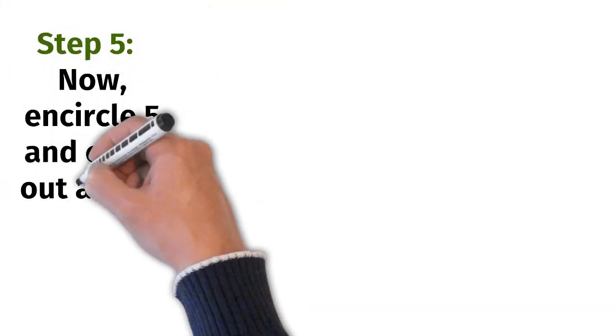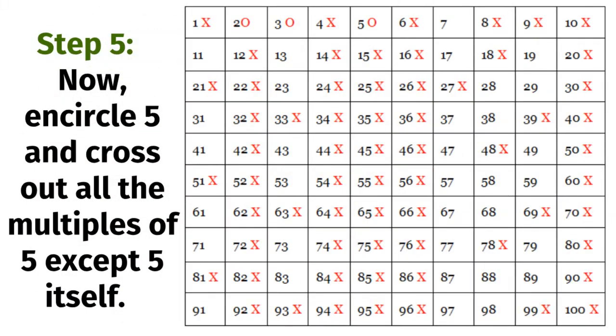Step 5: now encircle 5 and cross out all the multiples of 5 except 5 itself.